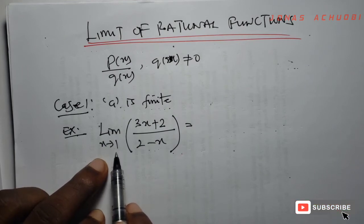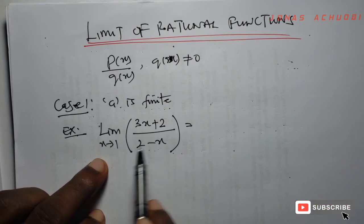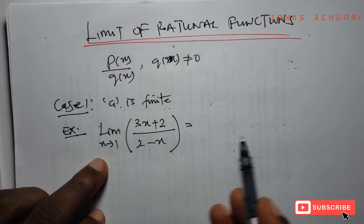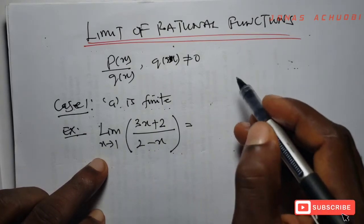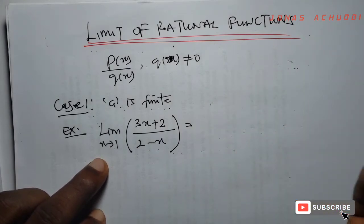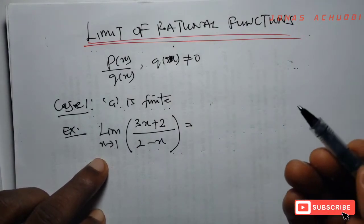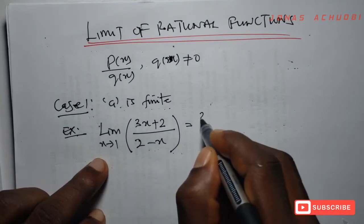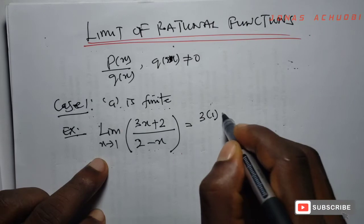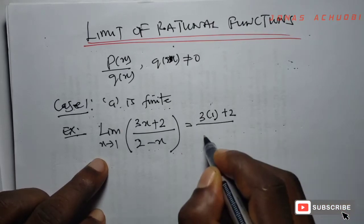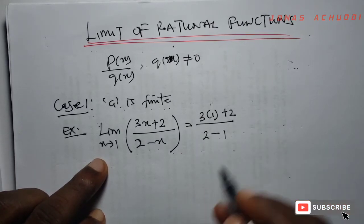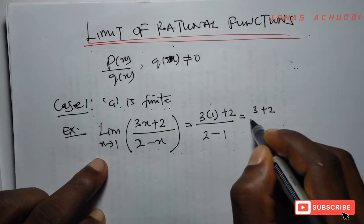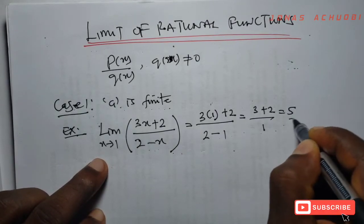By that we mean: if we substitute the point 1 into this function, do we get an indeterminate term like 0/0 or infinity/infinity? We substitute 1 and get (3×1 + 2) / (2 − 1) = 5/1 = 5.